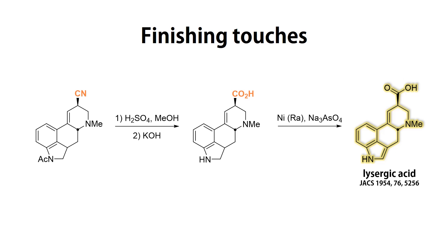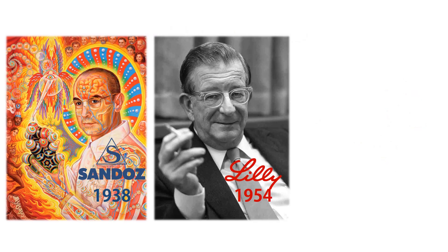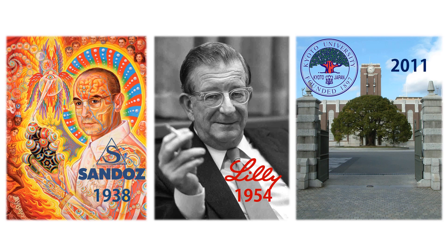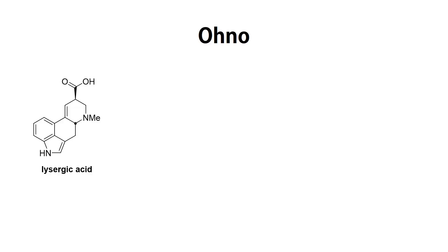Now let's talk about even more complex transformations and modern chemistry. The Lilly-Woodward synthesis employed a lot of basic but robust reactions — how does a modern approach to lysergic acid look? Chemists don't chain smoke in labs next to explosive chemicals anymore and the use of hydrogen cyanide as a solvent isn't anyone's favorite either. Let's take a look at an asymmetric synthesis of lysergic acid published in 2011 by Professor Hiroaki Ono and co-workers at Kyoto University. Instead of going through the dihydroindole like the Lilly-Woodward team did, Ono's team took a more direct approach.